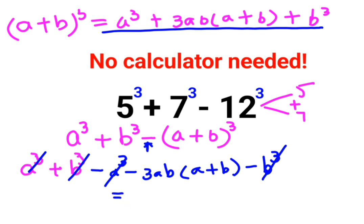And you're just left with minus 3ab(a plus b). Basically a was 5, b was 7, and a plus b is 12.